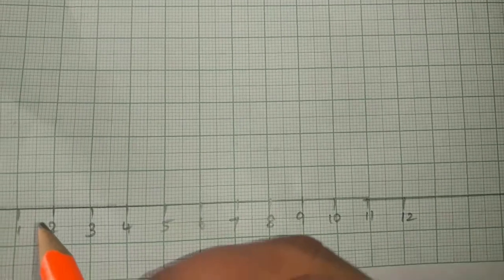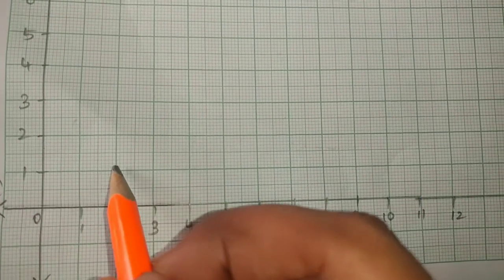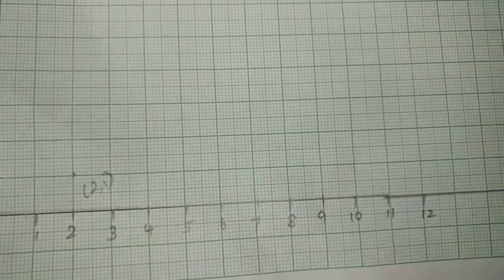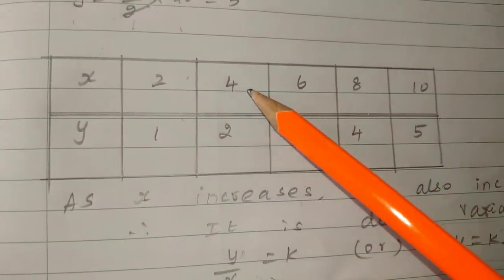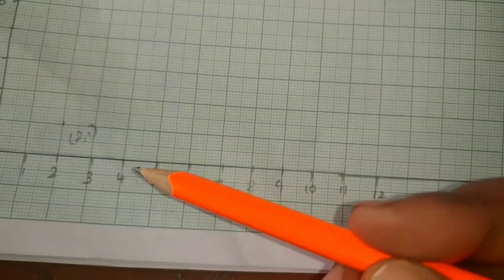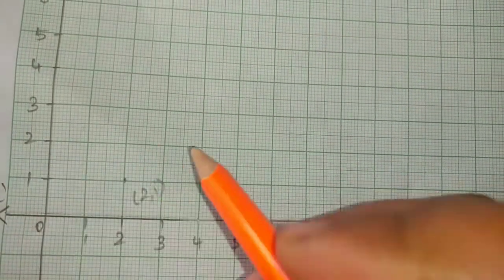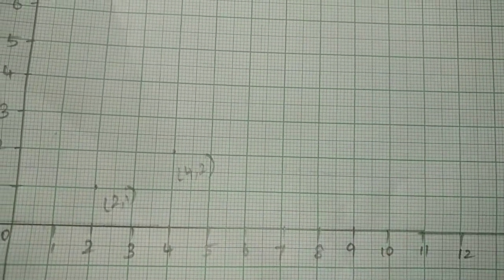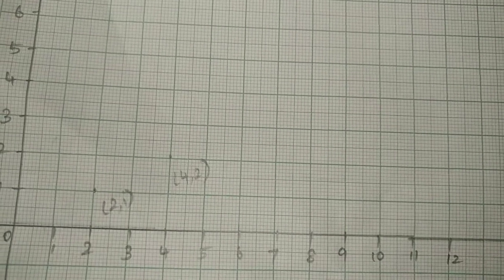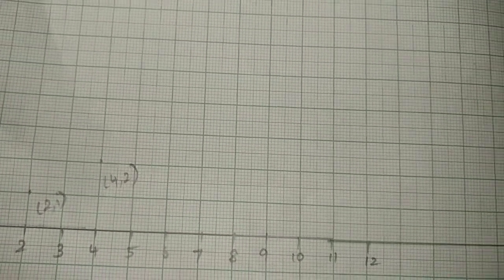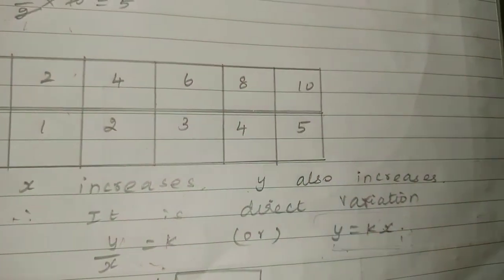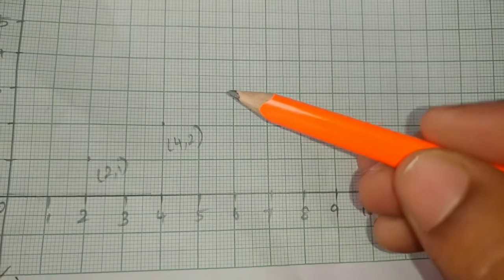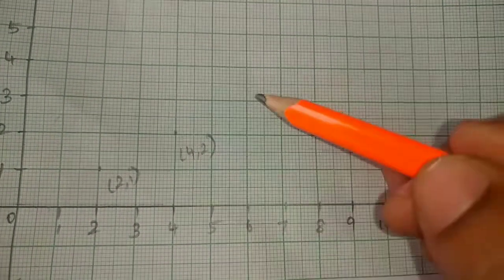To verify the equation on the graph, plot the points. When x is 2 on the x-axis and y is 1 on the y-axis, mark the point (2,1). When x is 4 and y is 2, mark the point (4,2). This confirms the direct variation line is correct.